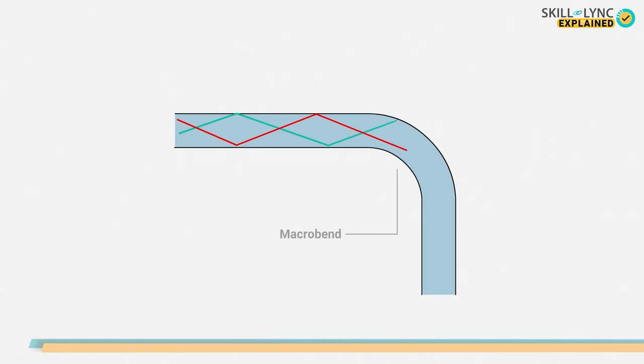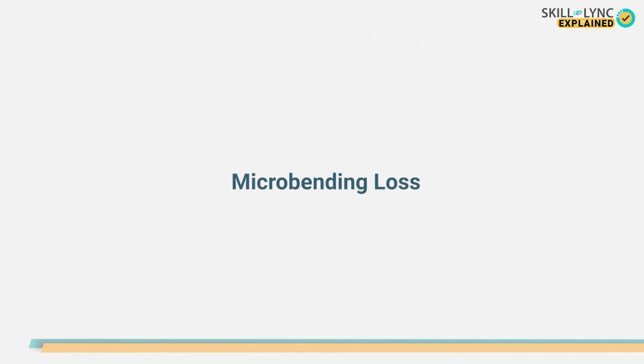During installation, the cables are bent around corners. To avoid loss of signal, the manufacturer should specify the minimum angle by which the fiber can be bent. Typical bending radius is between 10 to 14 centimeters.